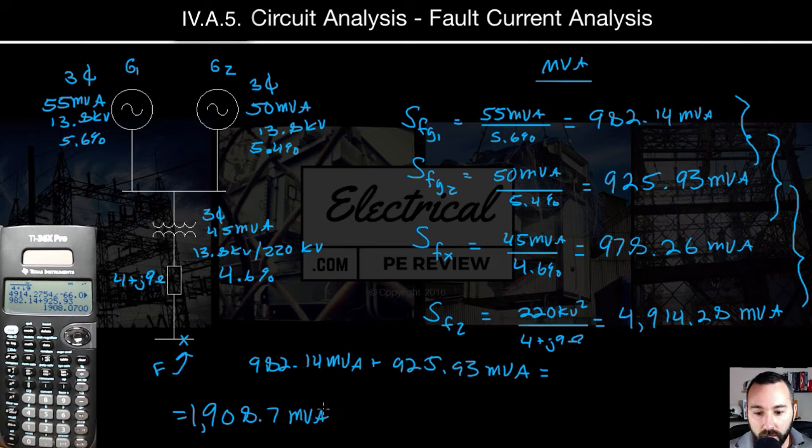That's this value right here. Okay, so we have 978.26 MVA. We're going to multiply them and then divide by the sum.